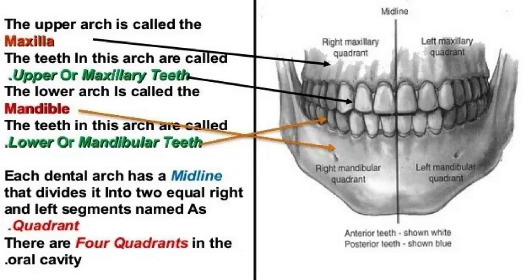Teeth are arranged in upper and lower arches. Teeth present in the upper arch are termed maxillary teeth because they are set in the upper jaw, which is the maxilla. Teeth in the lower arch are termed mandibular teeth because they are located in the lower jaw, which is the mandible. The mandible is movable, while the maxilla is stationary.